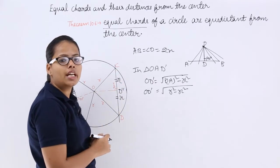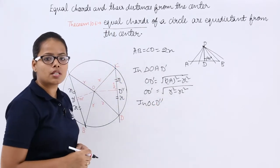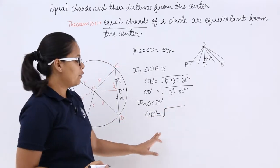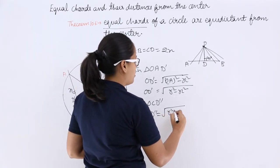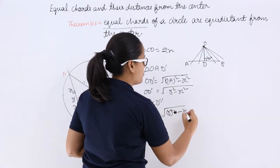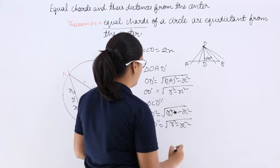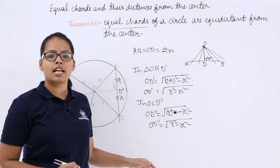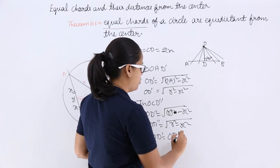Now let's consider triangle OCD''. To calculate the distance OD'', it will be equal to the square root of R squared minus x squared. So OD' is equal to OD''. When you compare the right-hand sides, you can see they are equal, so their left-hand sides will also become equal — OD' equals OD''.